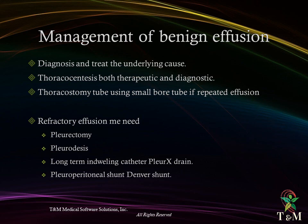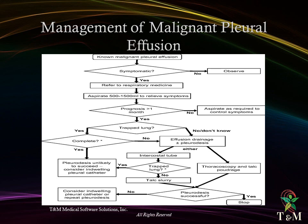Management of malignant pleural effusion: consider symptoms — if no symptoms, observe. If symptomatic, refer to a specialist. The first step is thoracentesis with removal of half to one and a half litres of fluid to relieve symptoms. In a multidisciplinary approach, if prognosis is less than one month, aspiration is required to control symptoms. If prognosis is more than one month, look for trapped lung — if present, consider an indwelling pleural catheter. If no trapped lung, drain fluid aiming at pleurodesis.